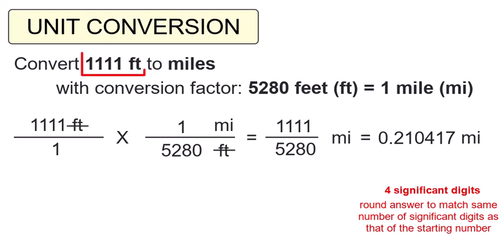Our starting number, 1,111 feet, has 4 significant digits. So we round our answer to 4 as well, and end up with 0.2104 miles.